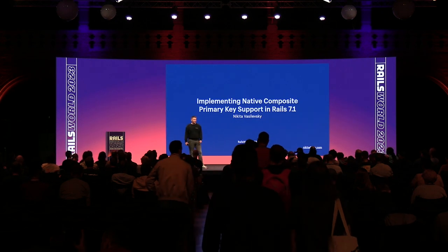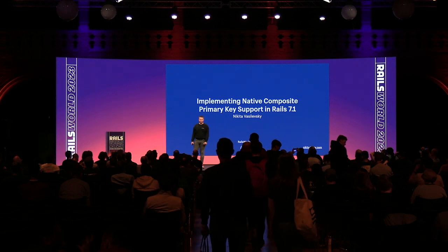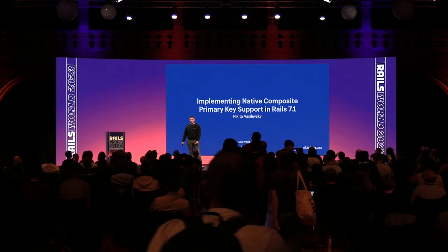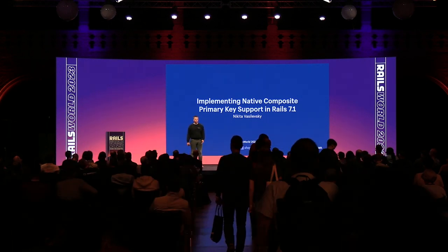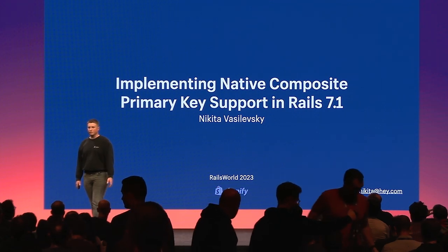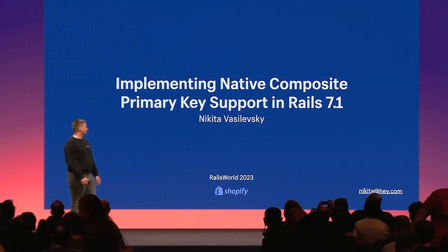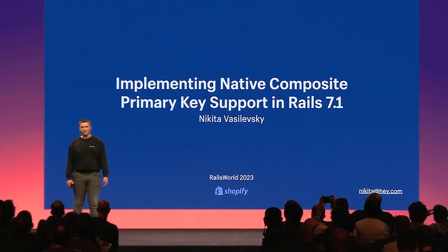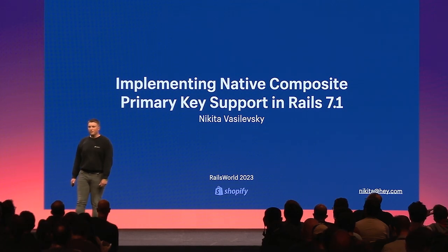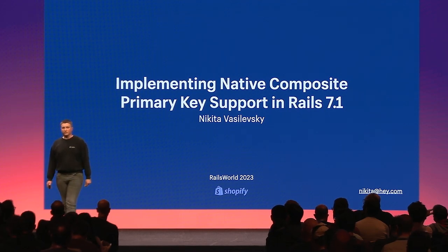Let's begin. Consider traditional Rails single column primary key as your favorite bicycle, your commute bicycle — simple, effective, perfect for a day-to-day commute, much like auto-incremented integer IDs. But what if you're planning a road trip that requires a much more capable vehicle to complete it?